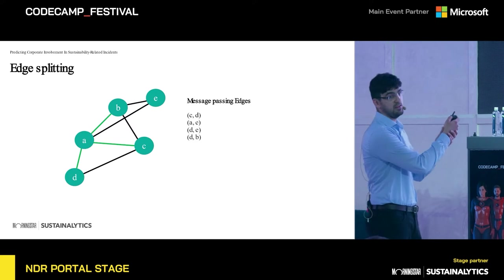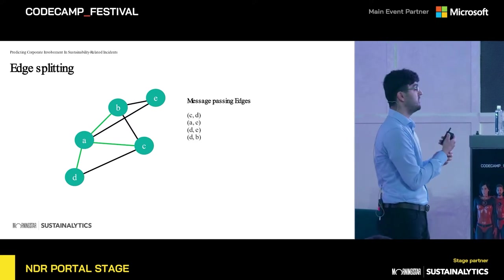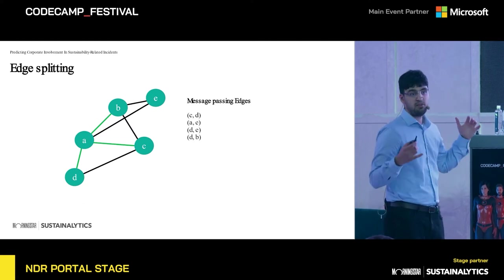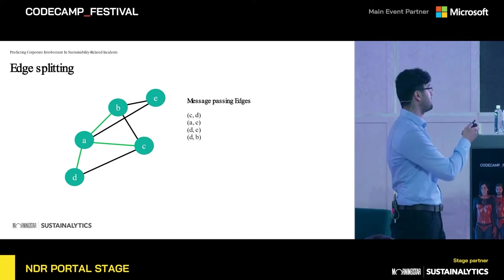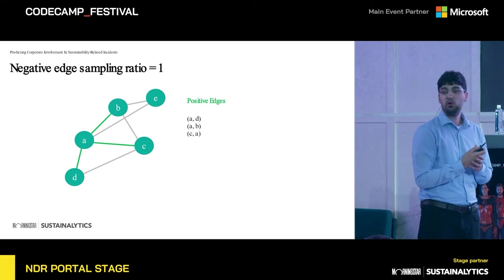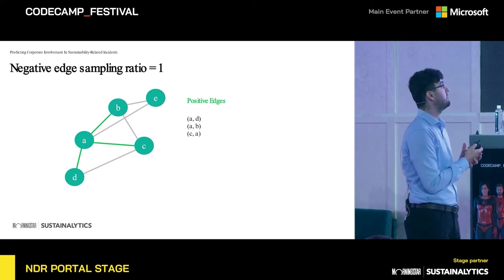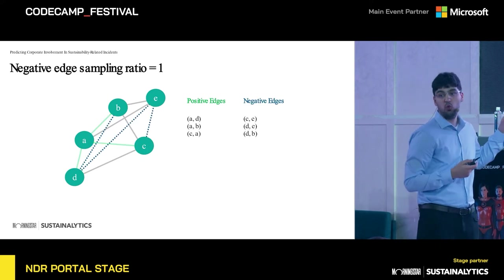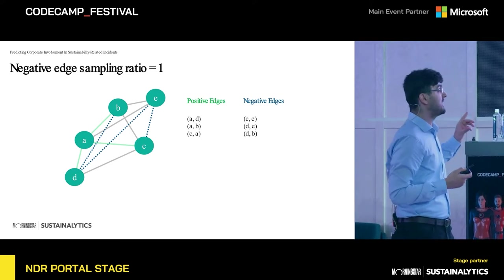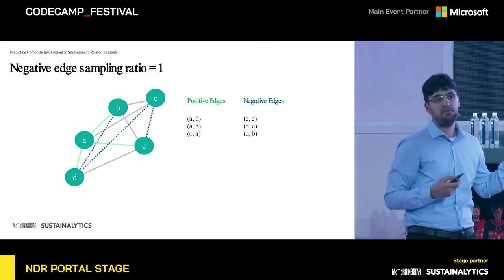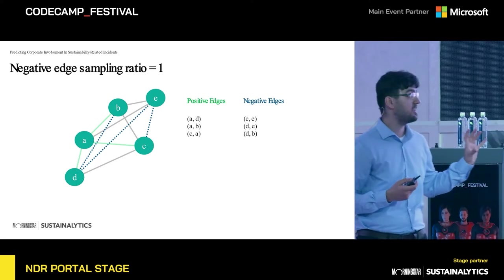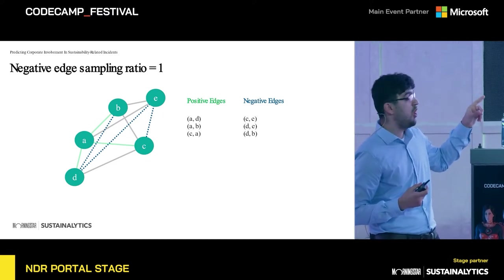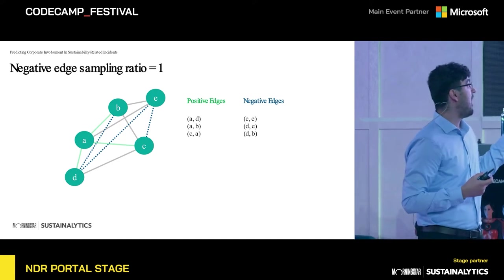In this graph, we have the message passing edges shown in black. These remain fixed during training, testing, and validation, and all nodes that share these edges will pass node embeddings between them. The rest of the edges will be labelled with 1 and are the positive edges. We also need to construct negative edges, which we label with 0. Because the graph is sparse, we will have many more negative edges than positive edges, so we sample an equal number of negative edges to keep our dataset balanced.